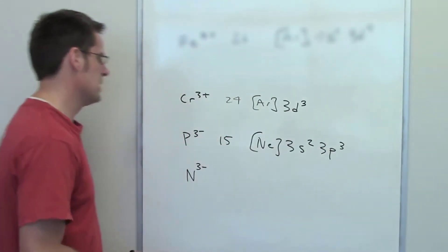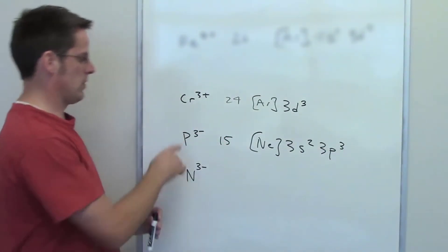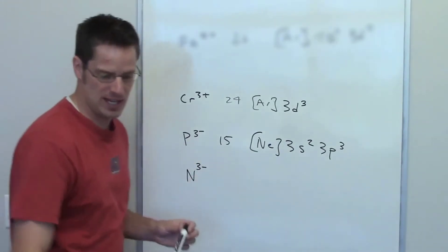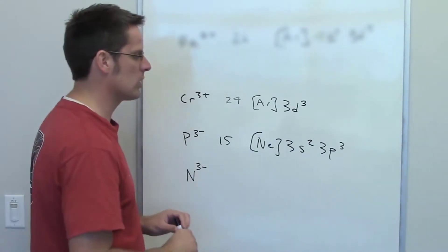1, 2, 3, yep. When it loses three, sorry, when it gains three electrons, it's going to gain three electrons. It now feels isoelectronic with argon.